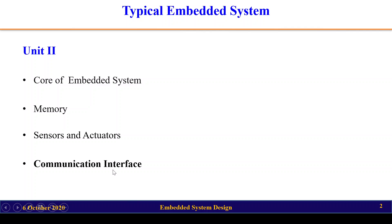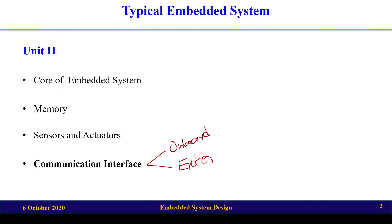In the last lecture we studied that there are two different types of communication interfaces: one is the on-board communication interface and the other is the external communication interface. The on-board interface is for communicating between devices present on board, while the external communication interface is used when an embedded system wants to communicate with any external device.